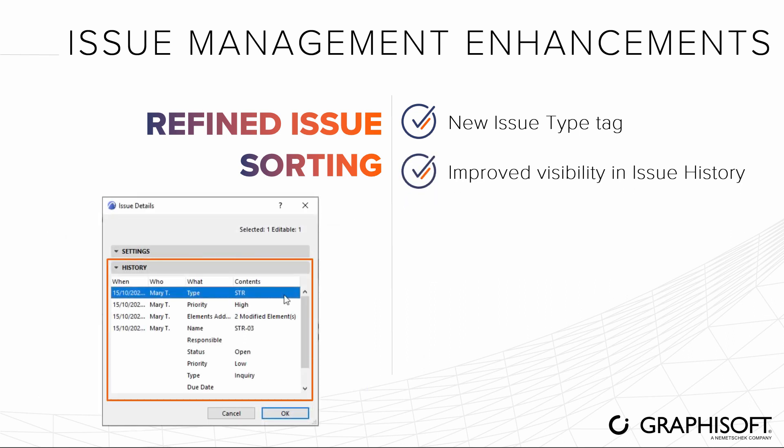For any given issue, the Issue History panel shows all the modifications to issue data. Each new item in Issue History shows only the changed parameter, so it is easy to see what has changed and when.